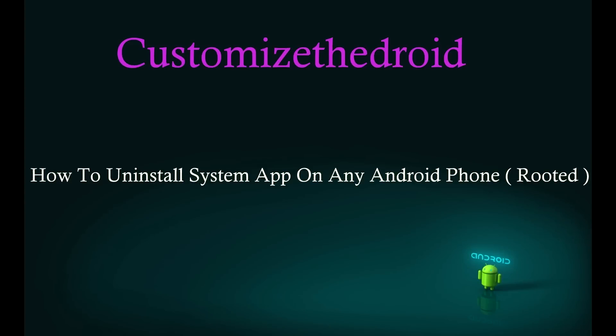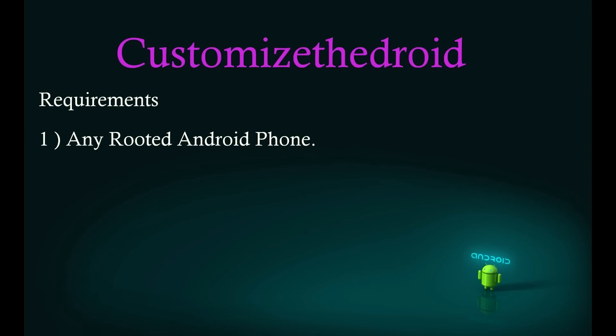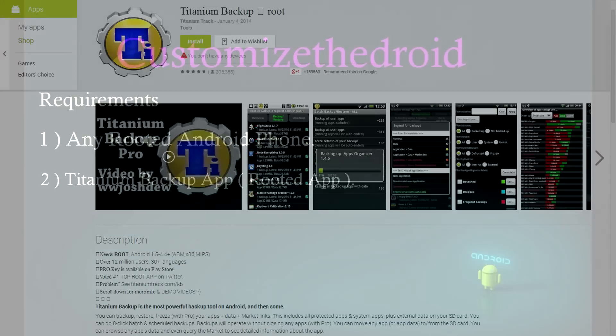Hey, what's up guys, welcome to Customize Detroit. Today's video is regarding how to uninstall system apps on any rooted Android phone. The requirement is any rooted Android phone and the Titanium Backup app, which is a root app and is available for free.